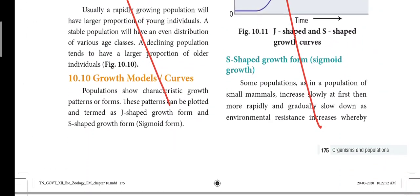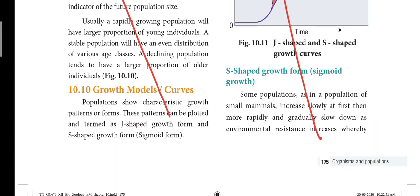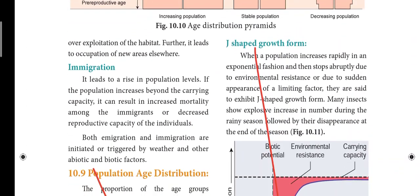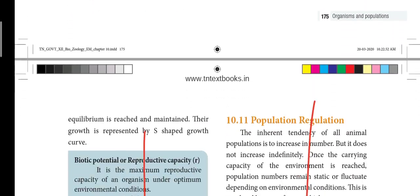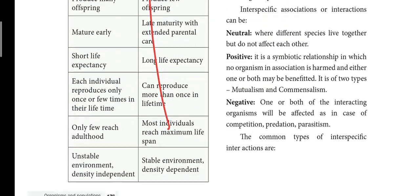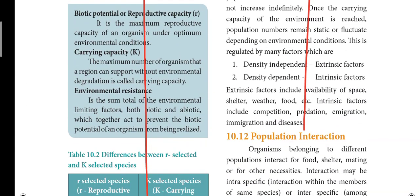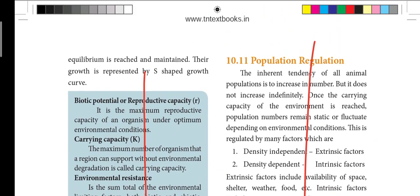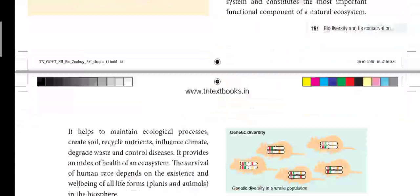Next page is 175. Heading 10.9 — Population Age Distribution — that heading is struck out. Growth Models and Curves is a heading — that heading is struck out. J-shaped growth form — that is struck out. Next page is 176. Right side covers Population Interaction. Heading 10.11 — Population Regulation — that is struck out. This is the 10th lesson.